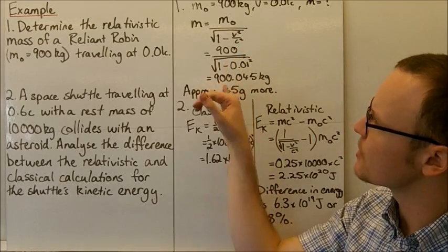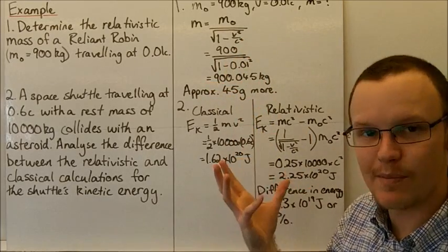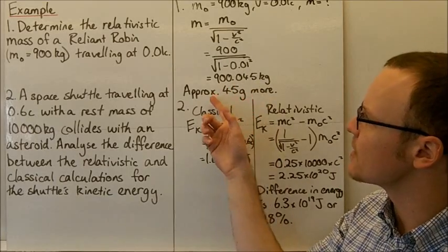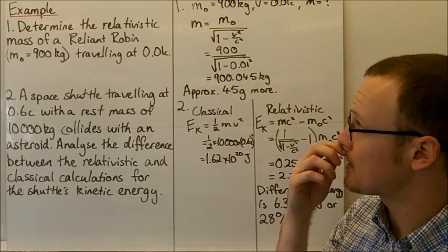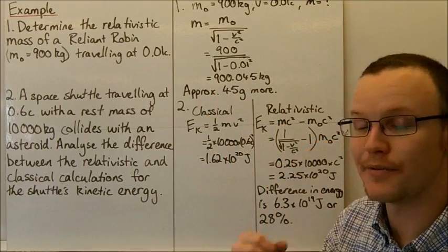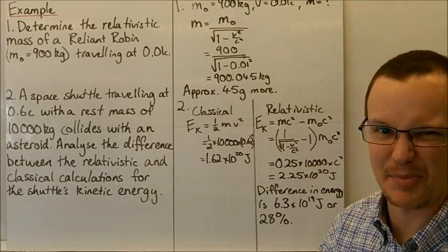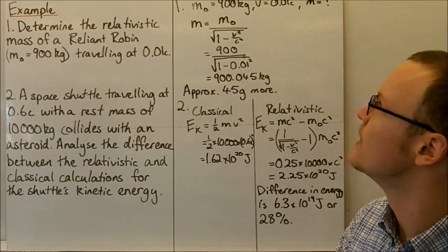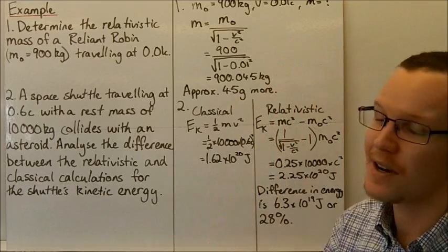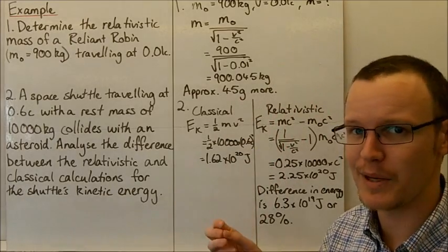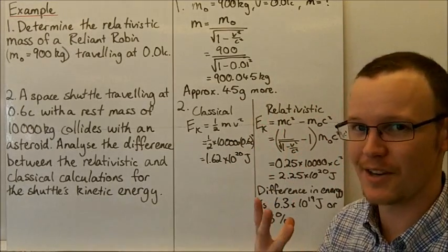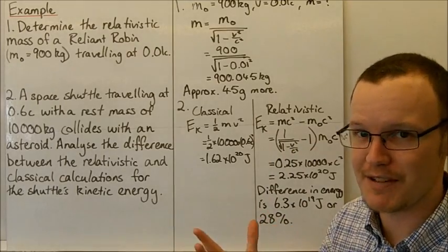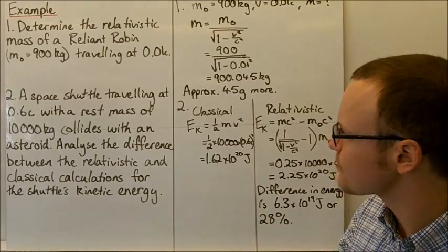Making that calculation, we see that the mass of the car is approximately 45 grams more. So even at 1% the speed of light, we don't see a great amount of difference in mass.